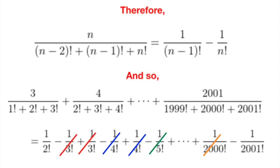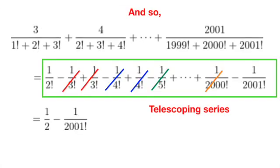Rewriting each of the terms using 1/(n-1)! - 1/n!, we see that all the intermediate terms cancel out, leaving only 1/2! - 1/2001!, which is our final answer.